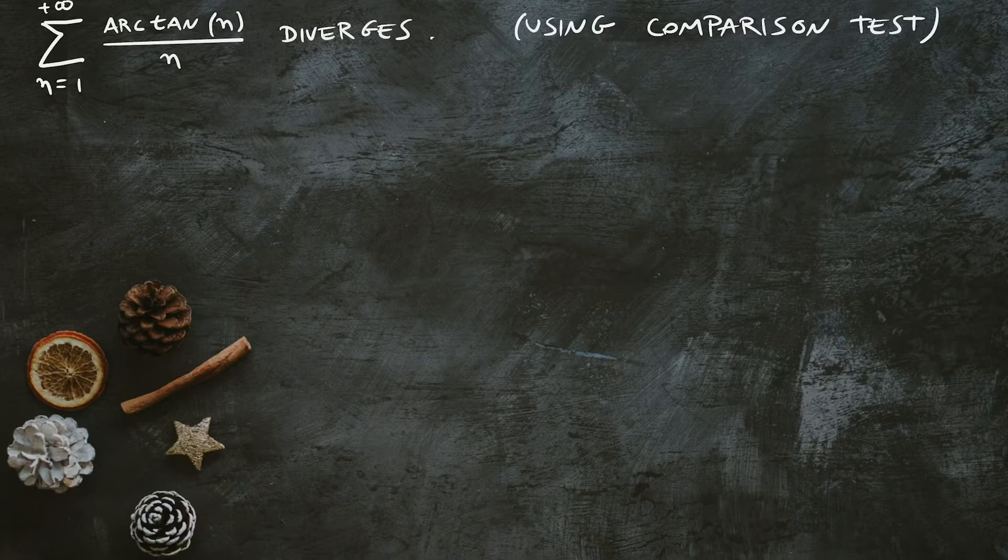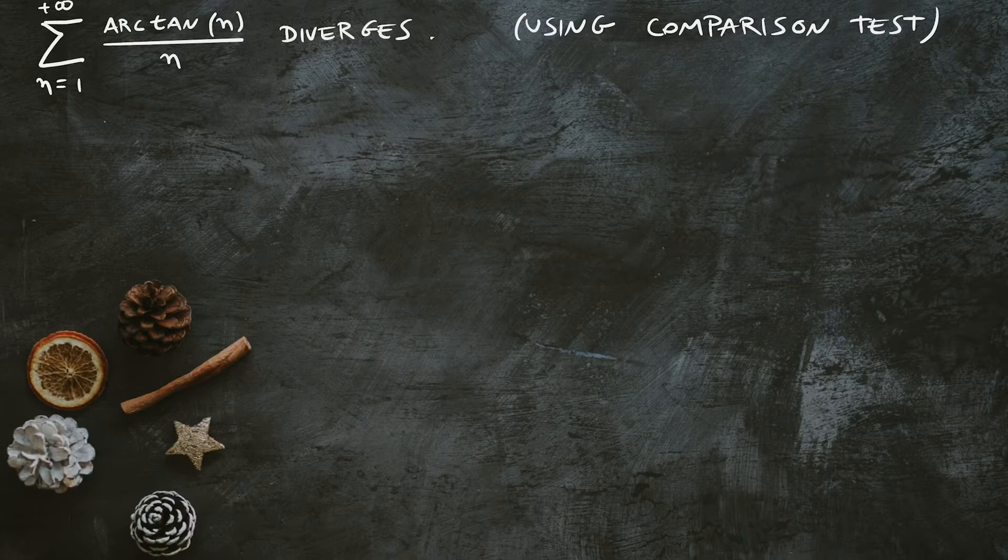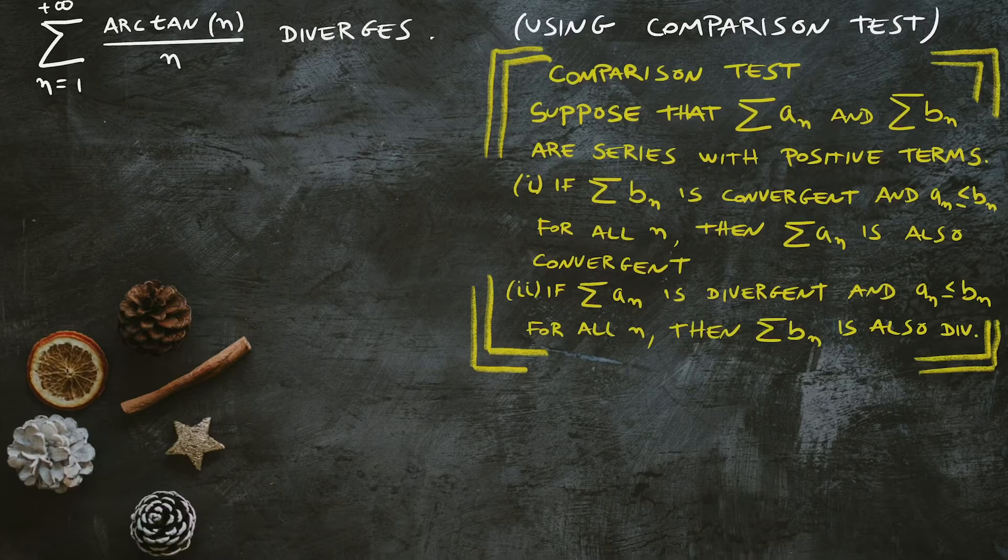At the same time, if the series Σa_n is divergent and a_n ≤ b_n for all n, then Σb_n is also divergent.